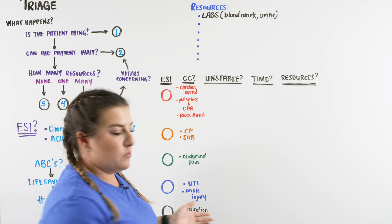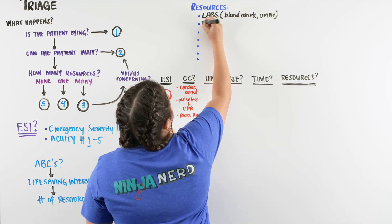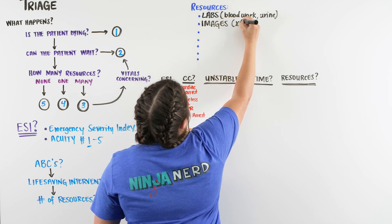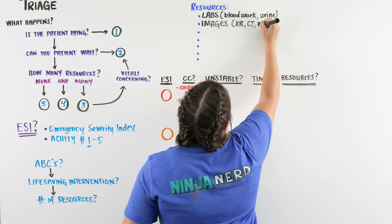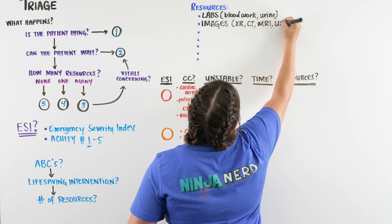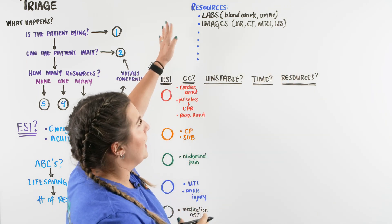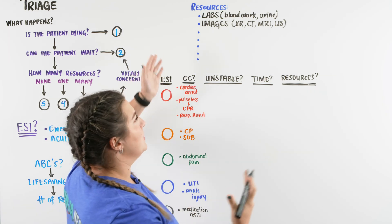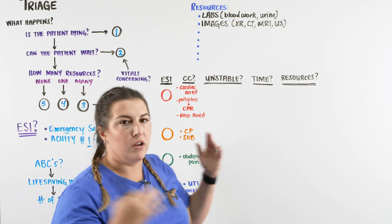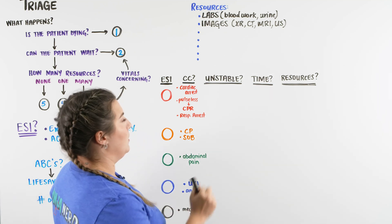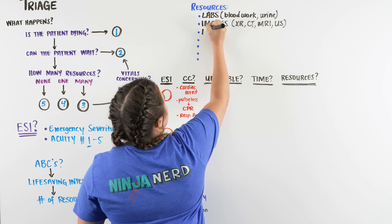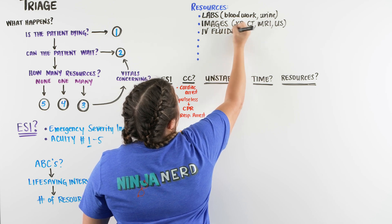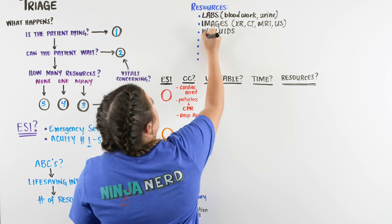So one resource is going to be labs. The next resource is going to be something else that they usually can't get done, images. So we're going to think of things like x-ray, cat scan, MRI, or ultrasound. So one resource is labs, blood work, urine. I usually just think liquids, if we have to take any liquids from them to get tested. Images, so any type of picture we're going to take of the patient. What else is something we typically do for a patient that possibly comes into the ER? We can give them IV fluids. So we're thinking all of our crystalloids that we could be giving them.